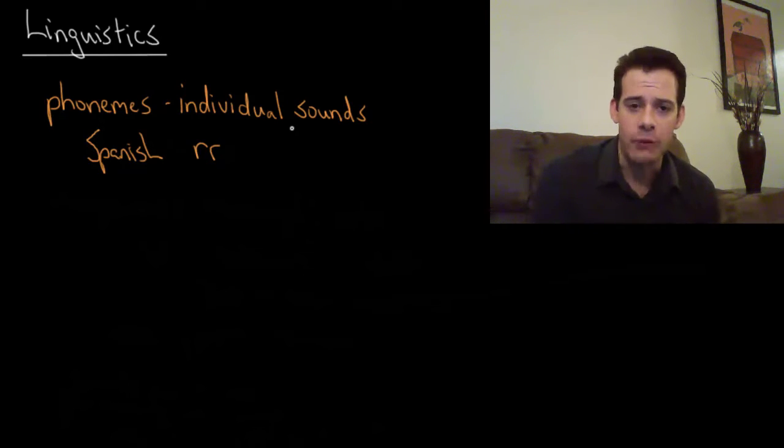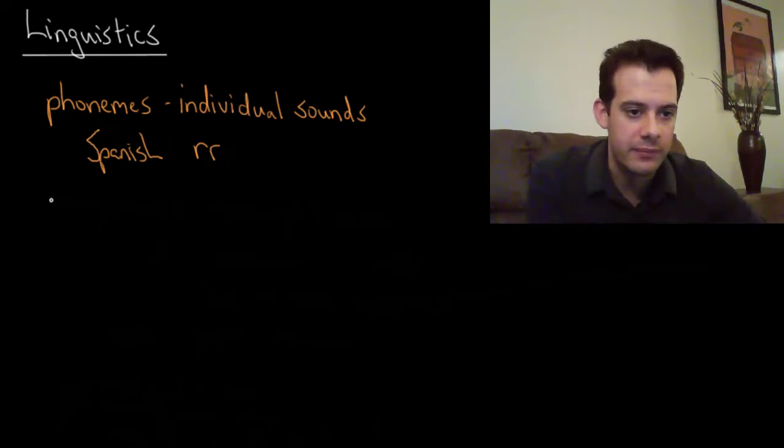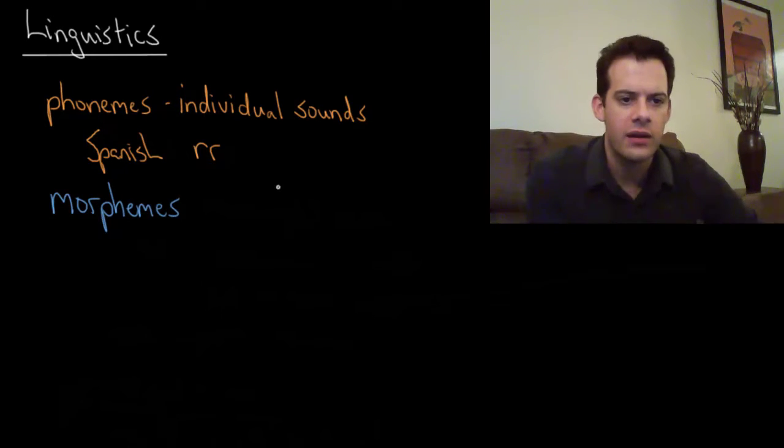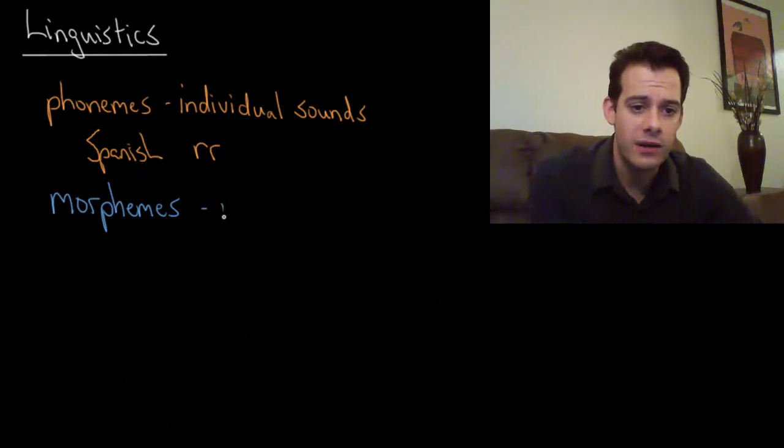Another way we could break a language down is that we could think about meaning, we could break it into meaningful pieces and so if we do that we're looking at morphemes. So phonemes refer just to the individual sounds in language whereas morphemes refer to meaningful units in the language.